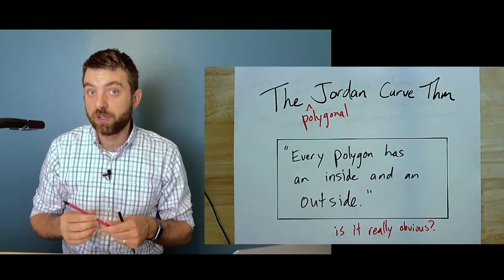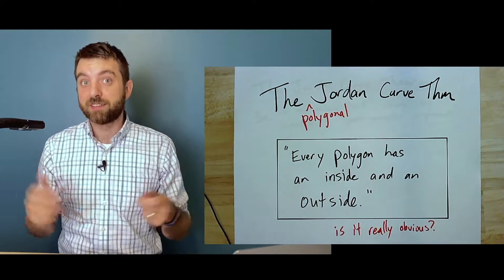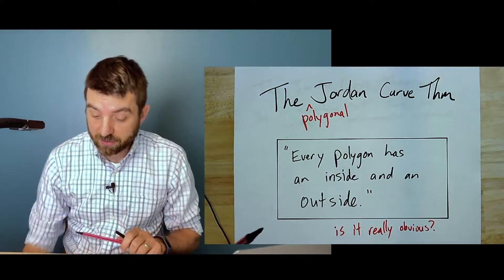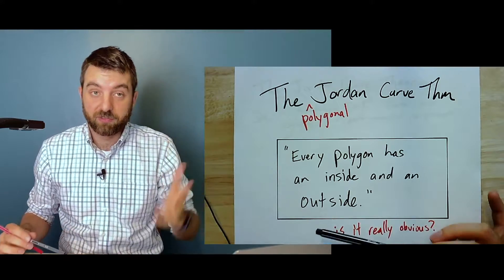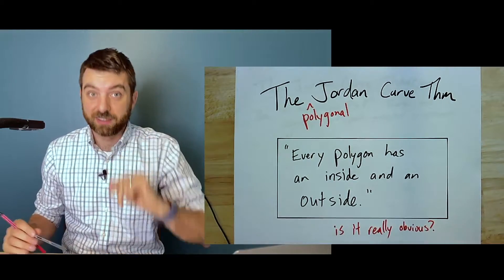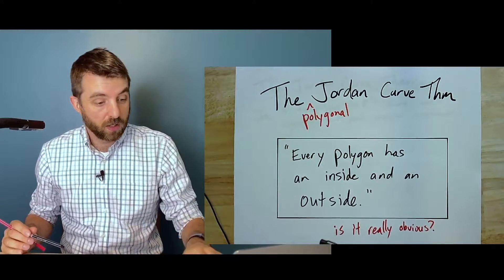You can also imagine some other weirder places to embed a cycle, to have a polygon, and again, you may not really be able to clearly define what is inside and what's outside. We'll see at least one example before we go.